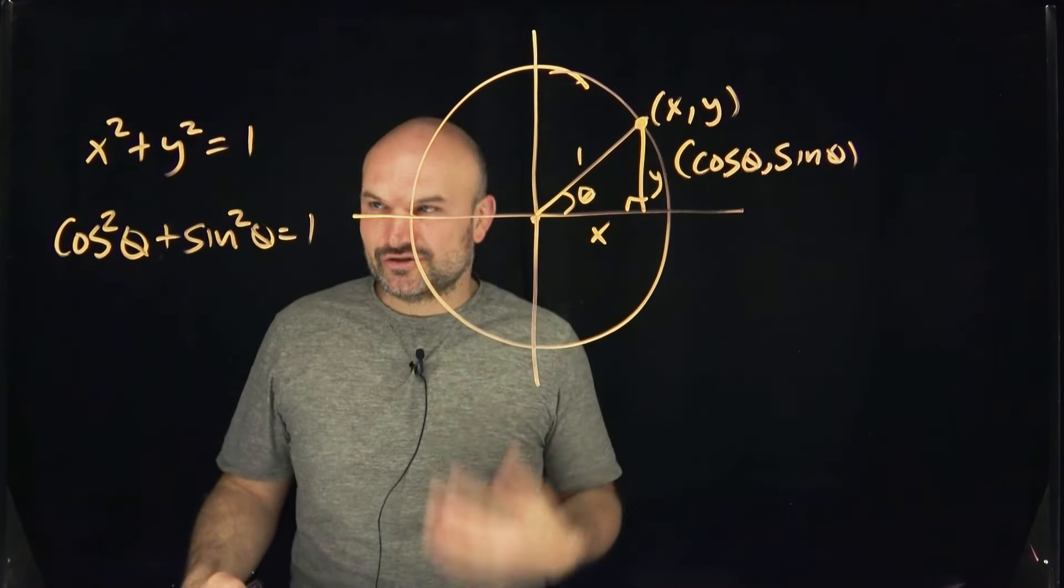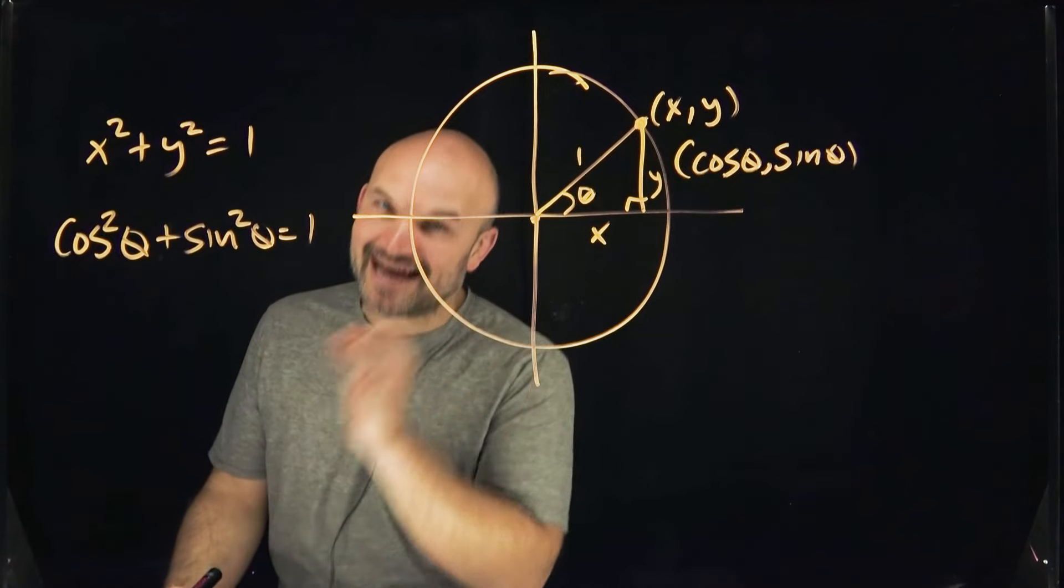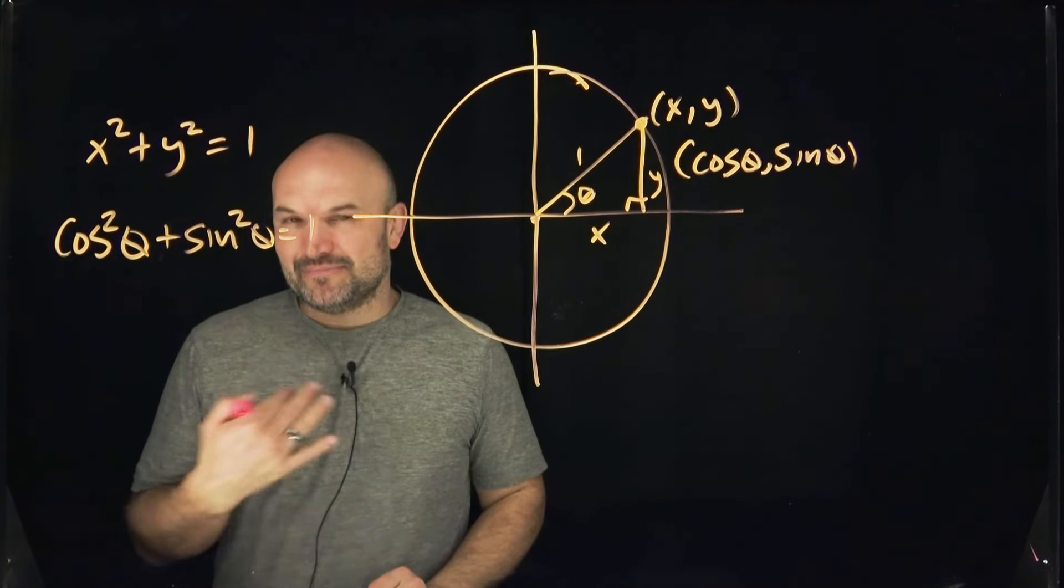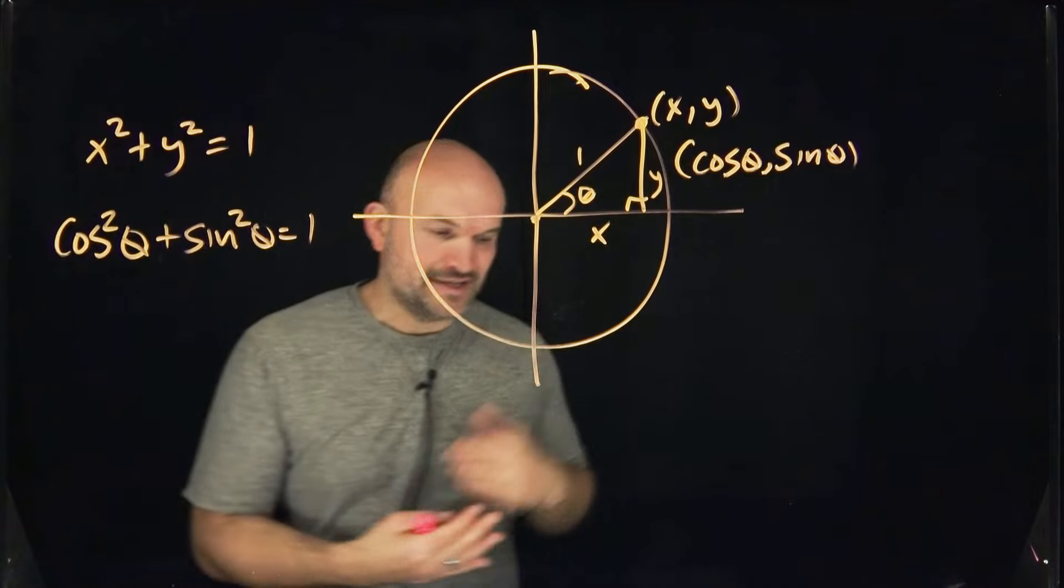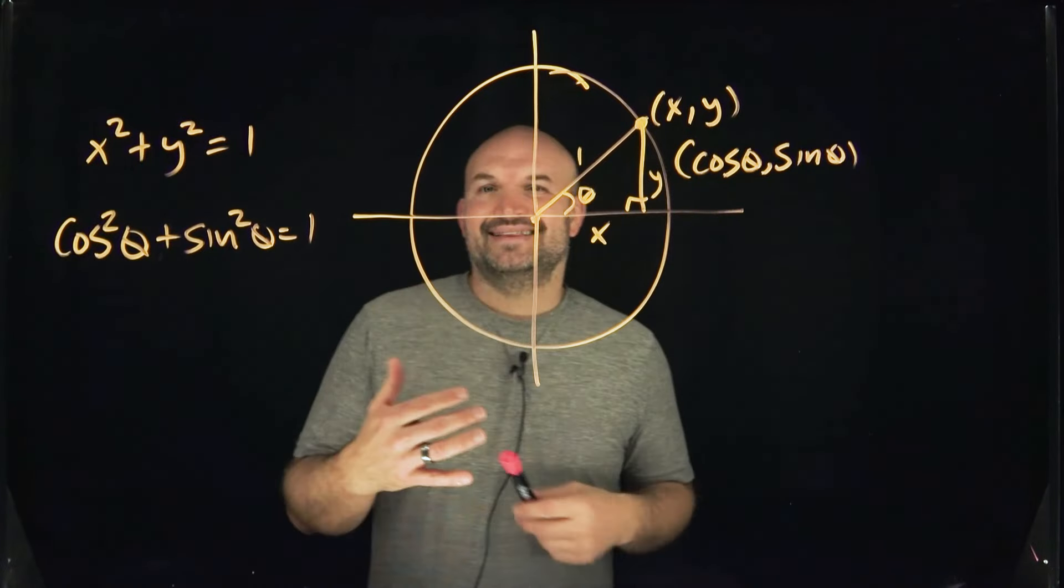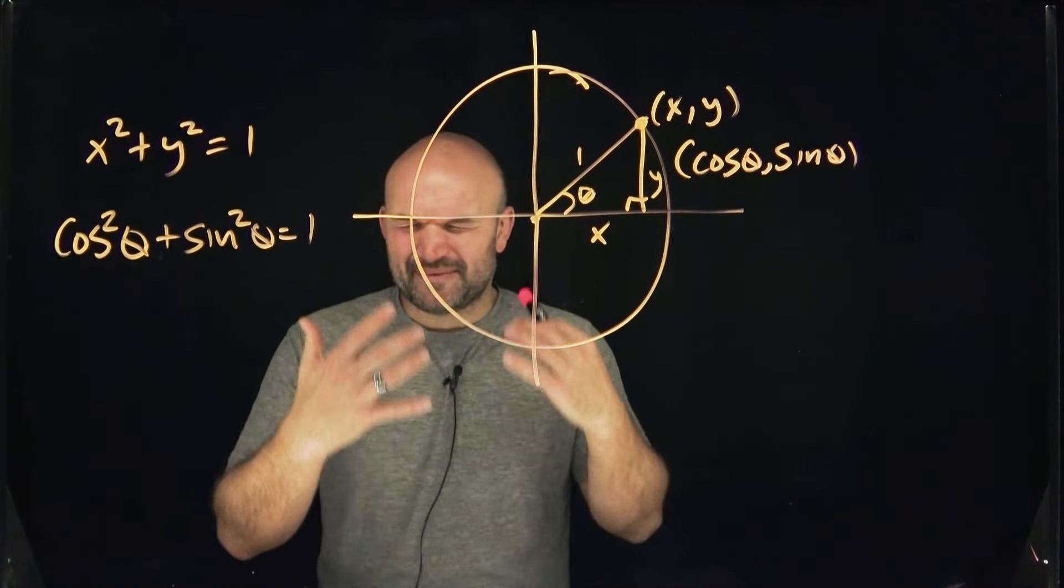However, if you've ever taken a trig test or you've learned, this is not your only Pythagorean identity. And remembering the other ones, unless you're a math teacher, unless you're doing a ton of extra examples, they can be sometimes confusing to like, oh crap, how do I remember these?